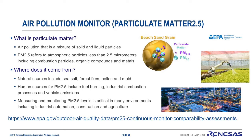These smaller particles include combustion particles, organic compounds, and metals. Particulate matter can come from both human and natural sources. Natural sources include sea salt, forest fires, pollen, and mold. As they are natural occurrences, they are harder to control and are usually left unregulated.